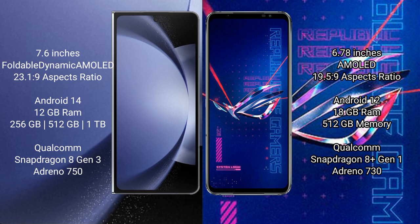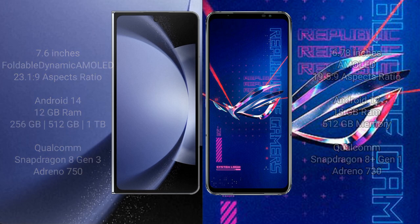Samsung Galaxy Z Fold 6 comes with 12GB RAM and 256GB, 512GB, or 1TB internal storage, powered by a Qualcomm Snapdragon 8 Gen 3 processor with Adreno 750 GPU. Asus ROG Phone 6 Pro comes with 18GB RAM and 512GB internal storage, powered by a Qualcomm Snapdragon 8 Gen 1 processor with Adreno 730 GPU.